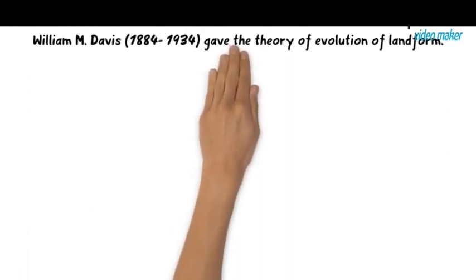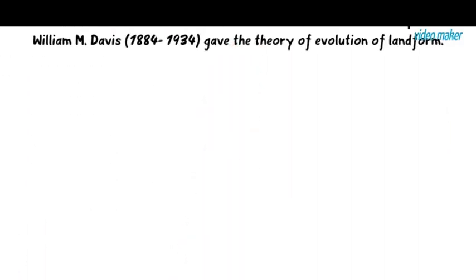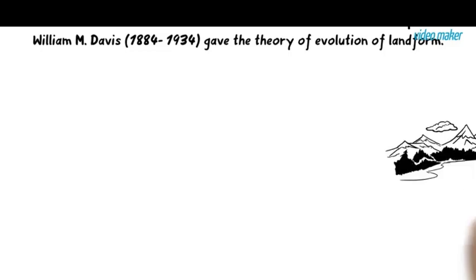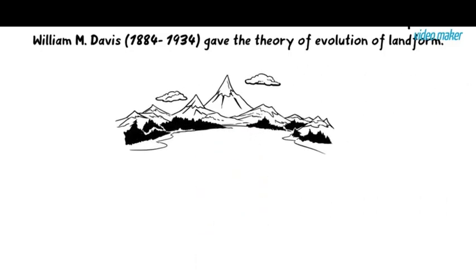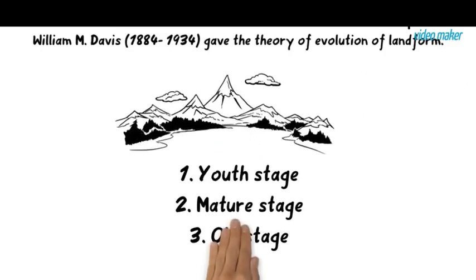Today we will learn about the theory of evolution of landform. This theory was given by William Morris Davis in the 20th century. The Davisian cycle of erosion has an orderly series of stages through which landforms were believed to pass.